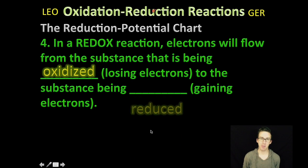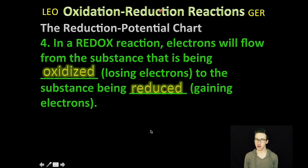Okay, and then the last thing just to keep in mind as you think about the reduction potential chart, just remember that in a redox reaction, electrons will flow from the substance that is being oxidized or losing electrons to the substance that is being reduced or gaining electrons.